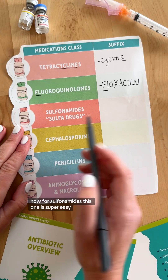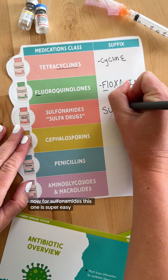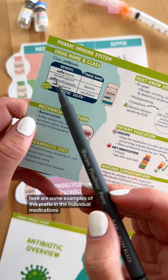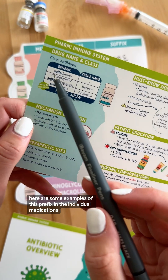Now for sulfonamides. This one is super easy. The prefix is sulf-. Here are some examples of this prefix in the individual medications.